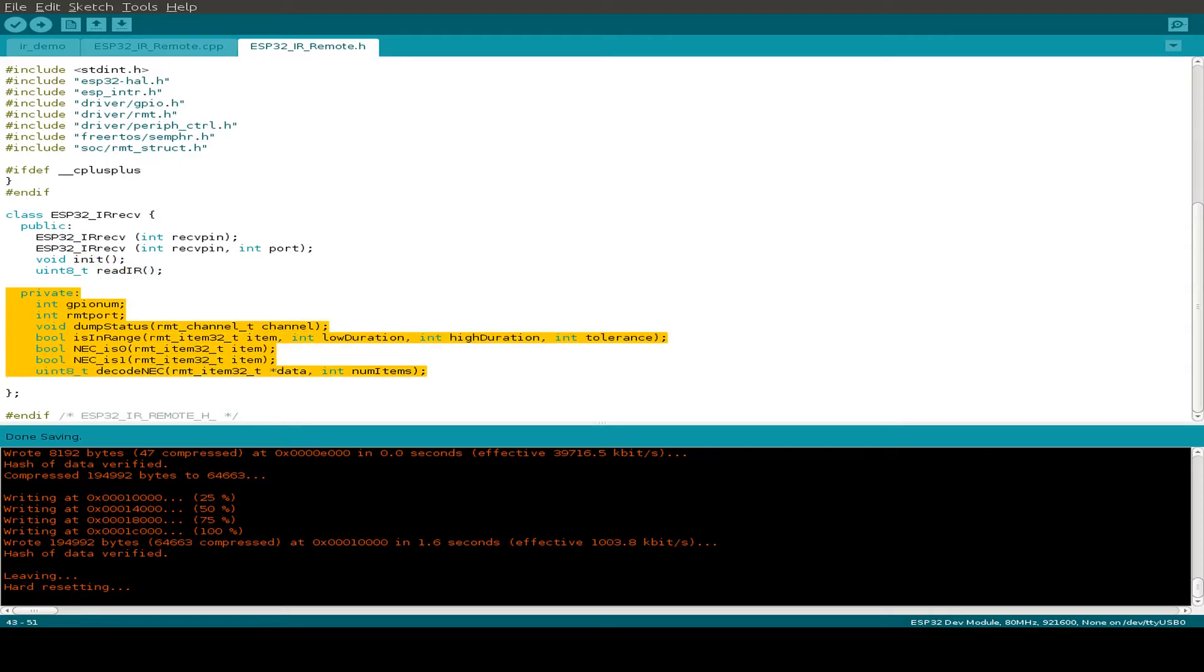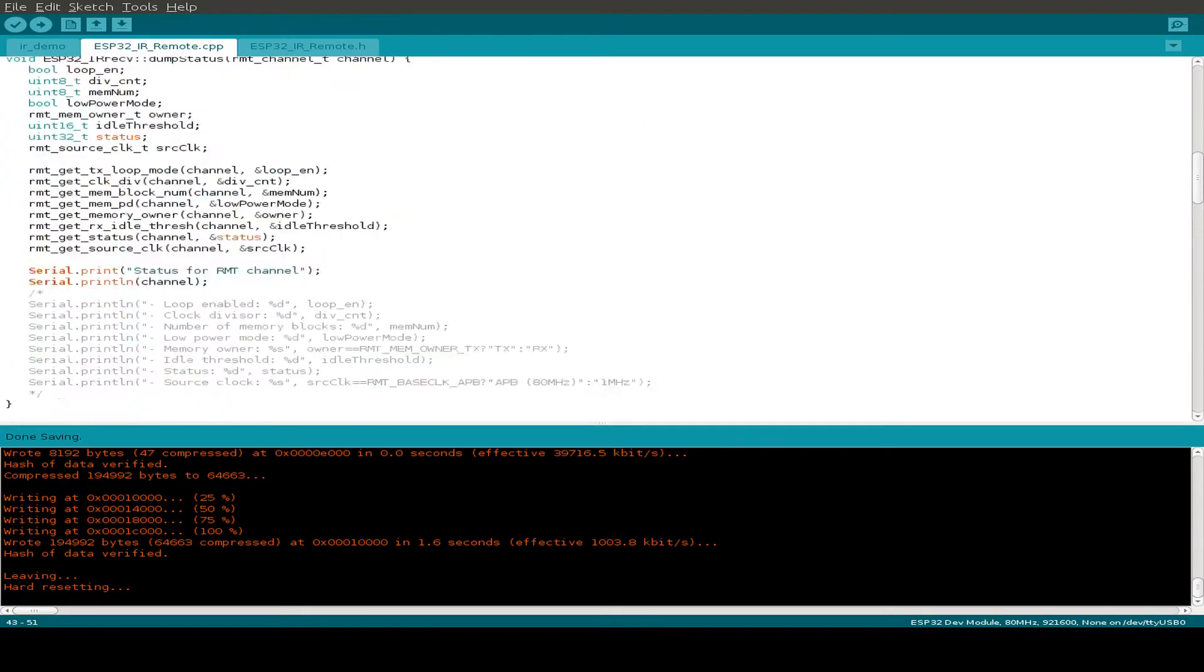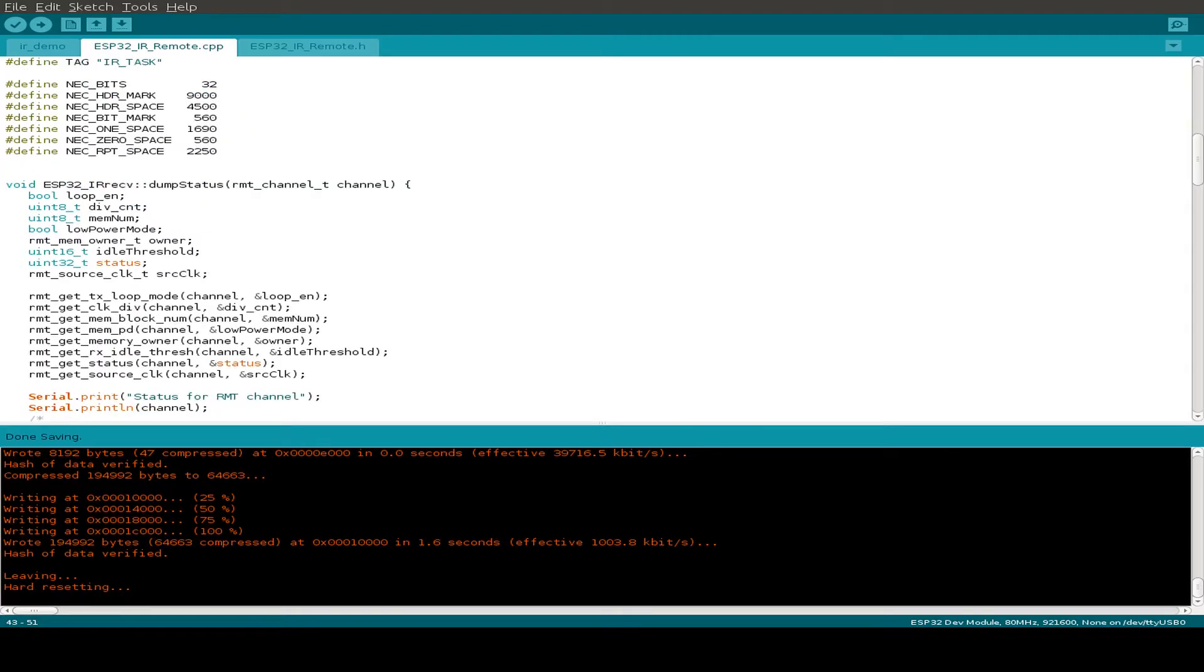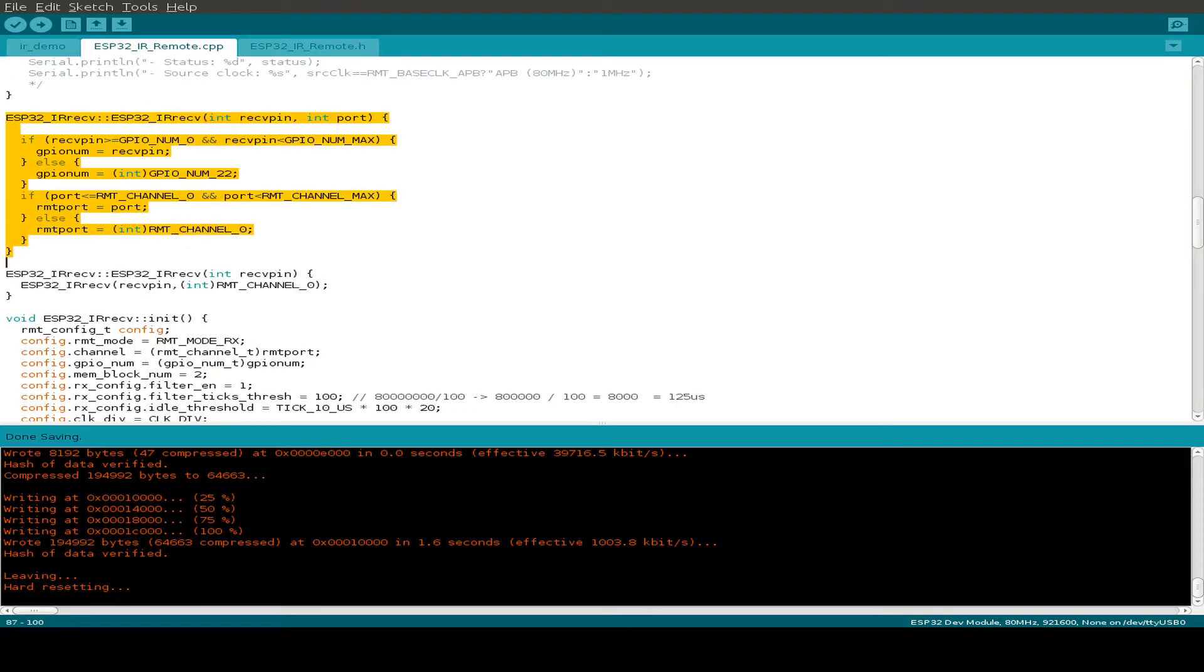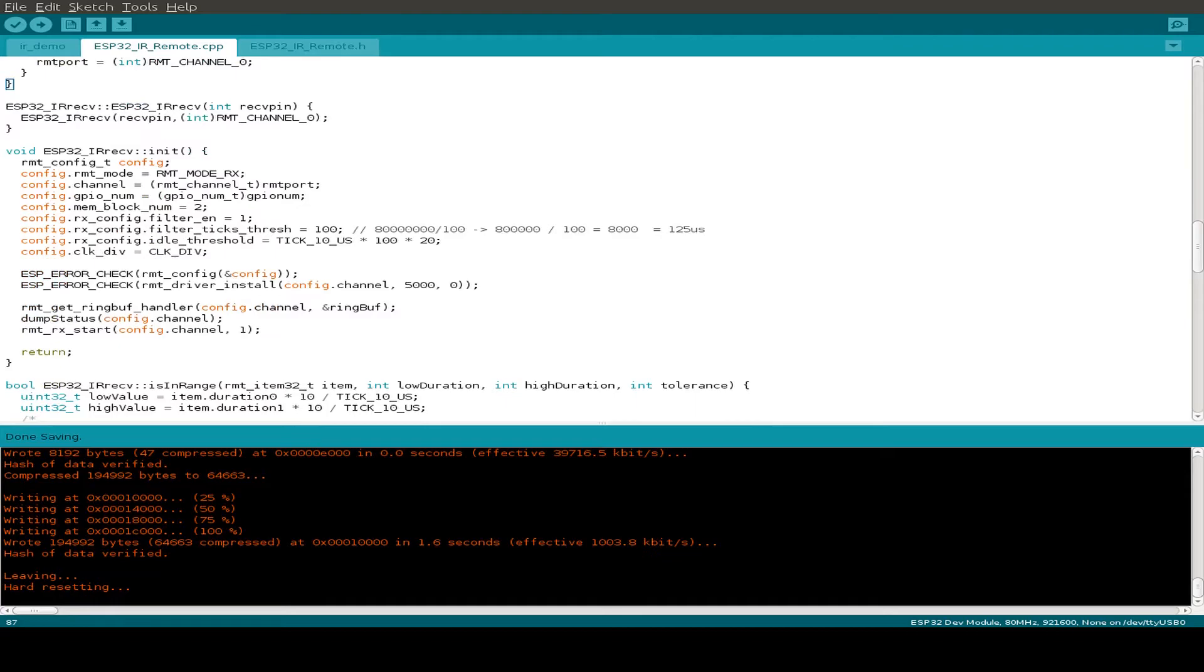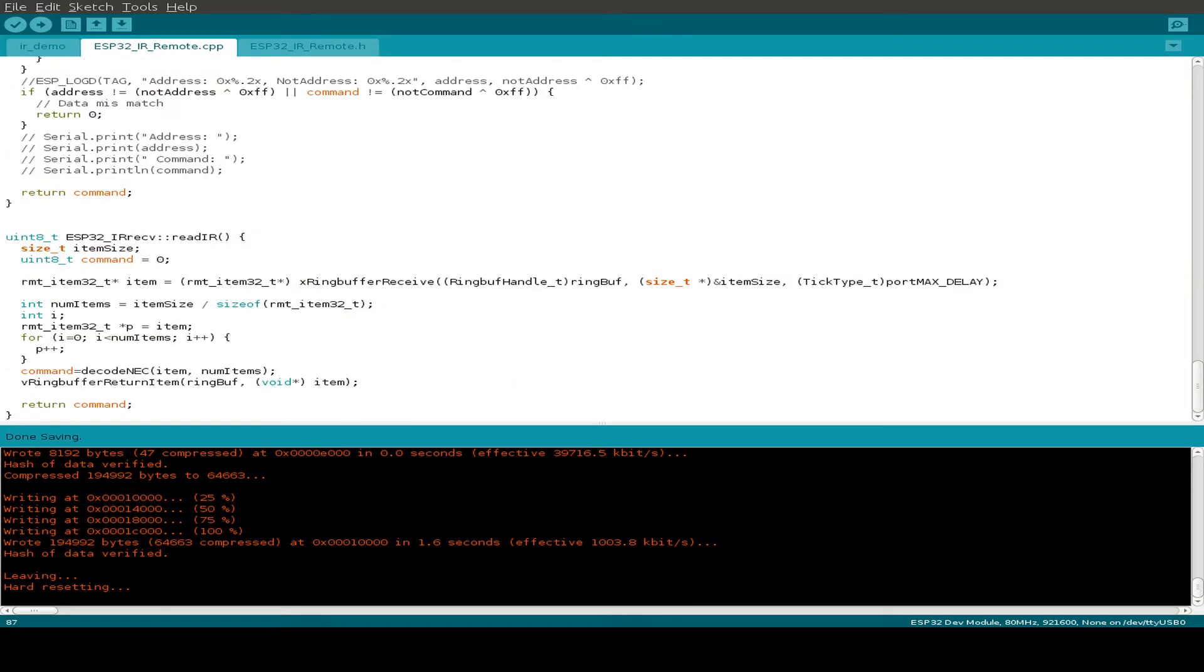Let's have a look into our class. This all should look the same like the Eclipse example, just wrapped around a small C++ class. We have a small constructor with some setups. We set up the GPIO pin and we can also use a remote port. If you don't initialize the port, then we just get the remote channel zero. Then we initialize the whole remote functionality from the ESP32. In the read function, we just set up the ring buffer and we decode the NEC type remote control signals. And that's it.